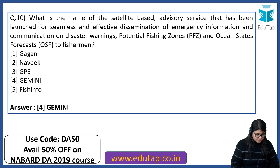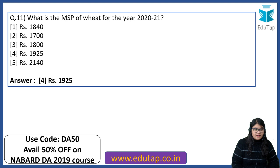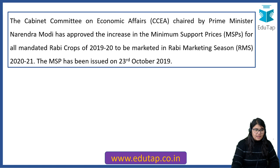What is the MSP of wheat for the year 2020-21? These kind of MSP-based questions are very prone to come because there is specific focus on agriculture in the general awareness section — all memory-based questions. The right answer is Rs. 1925. The Cabinet Committee on Economic Affairs chaired by PM Narendra Modi approved the increase in MSP for all mandated Rabi crops of 2019-20. The MSP was issued on 23rd October — very recent and important. Star mark this.